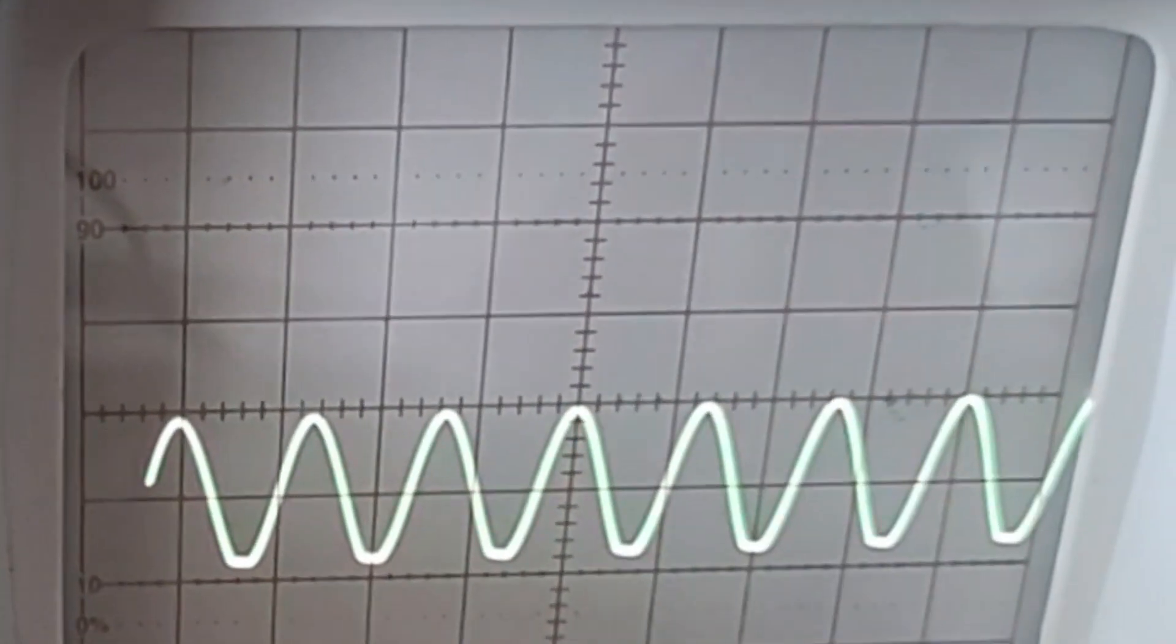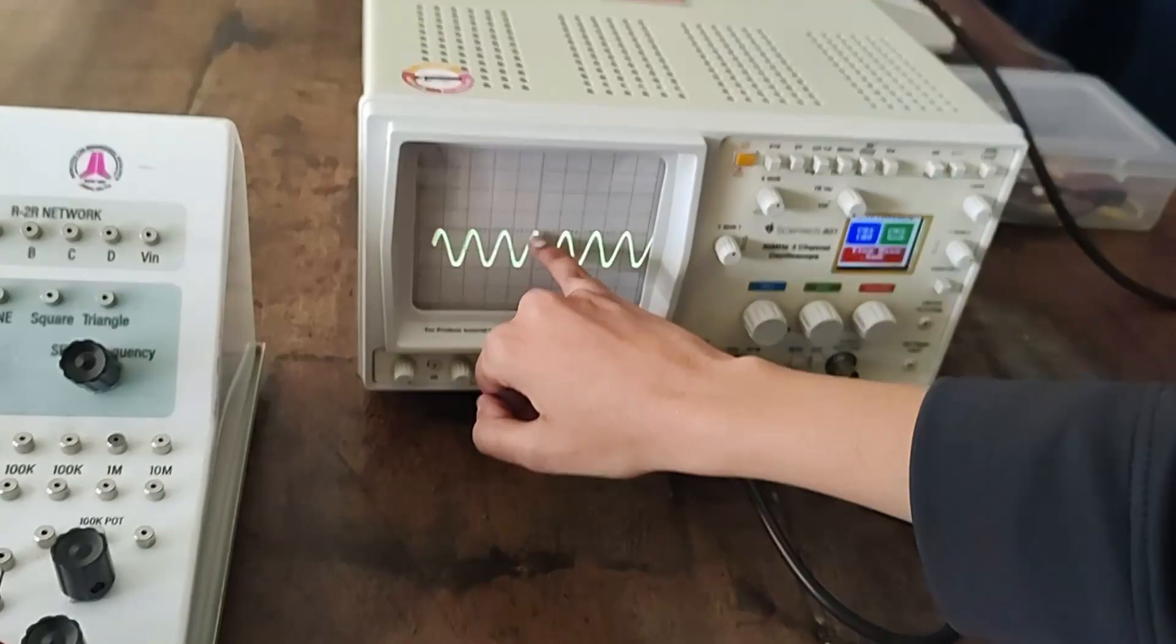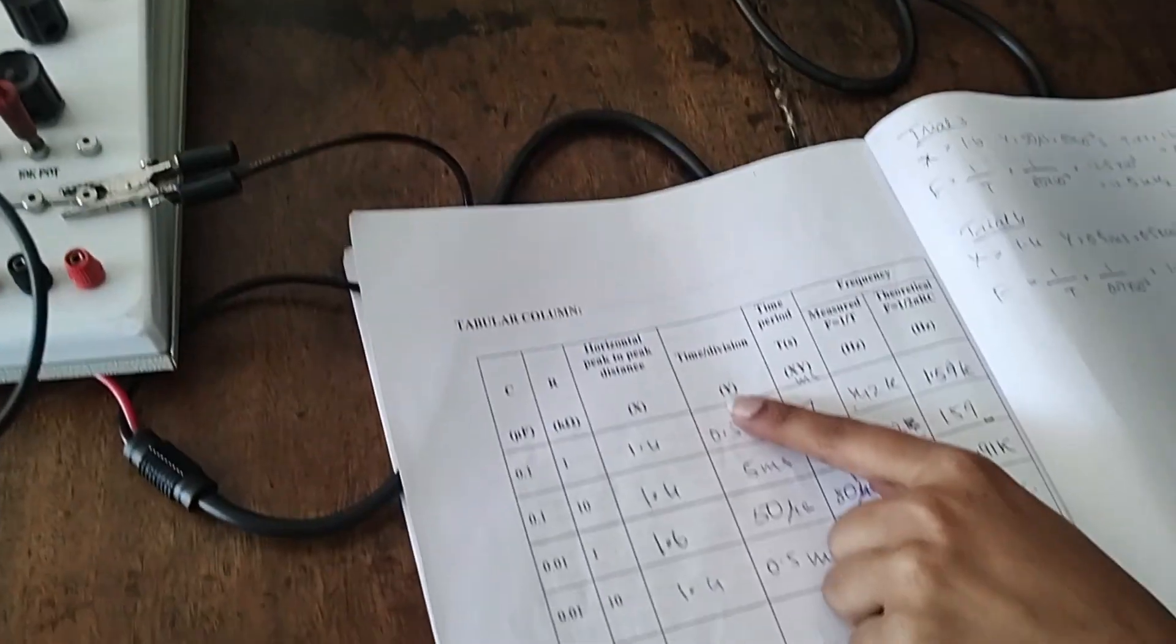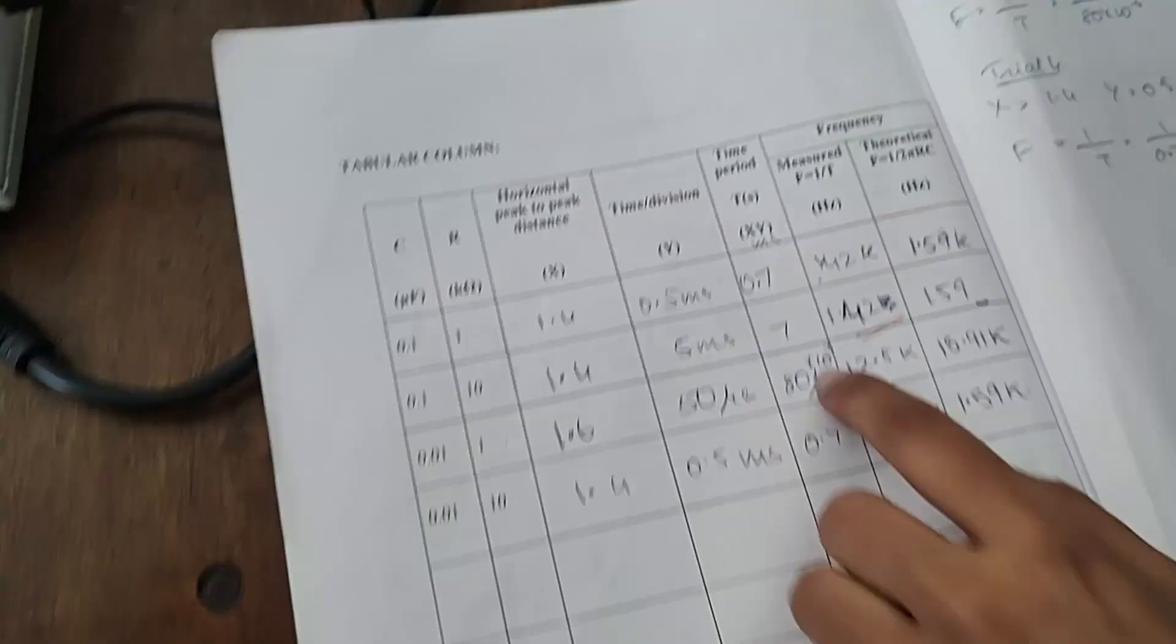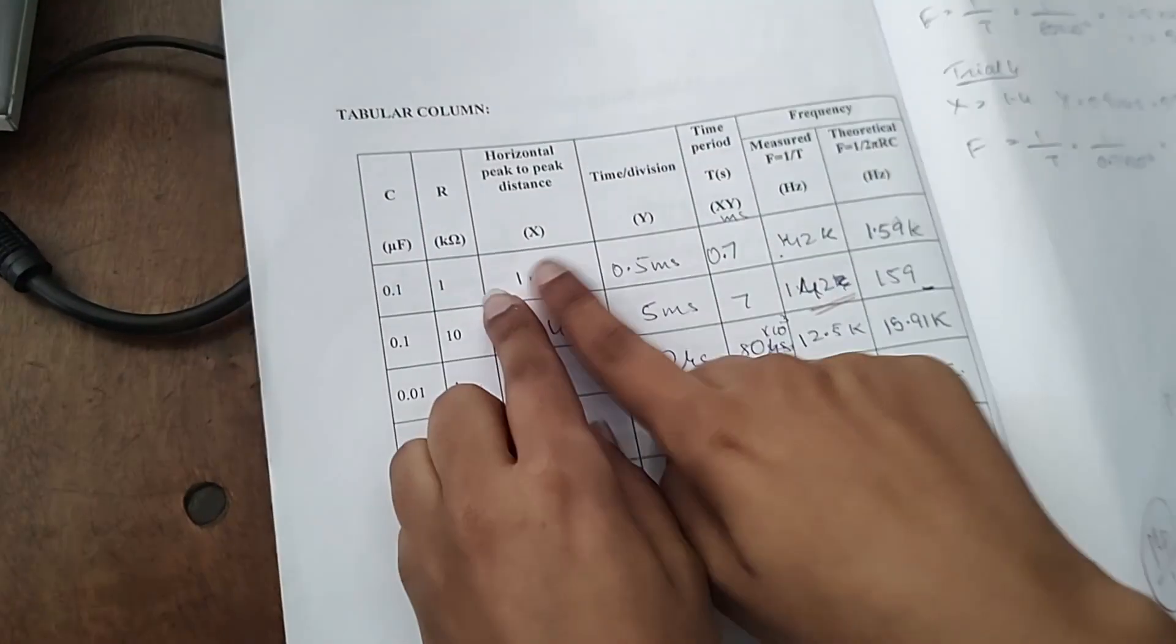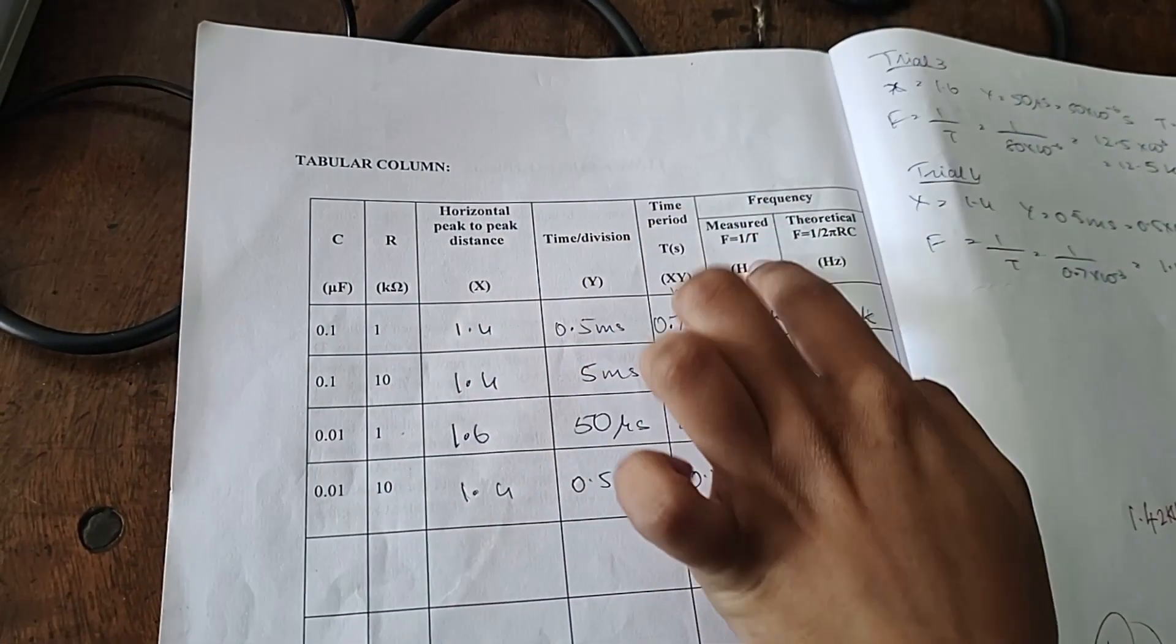Horizontal peak to peak distance reading is the distance between this peak and this peak. Time per division is this value over here, time base. That is your time per division value. You need to multiply these two to get your time period, and then frequency is nothing but 1 by time period.